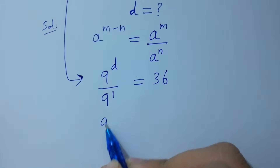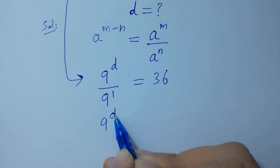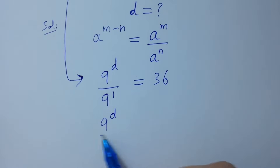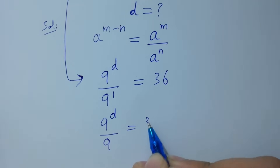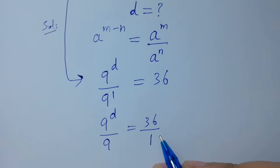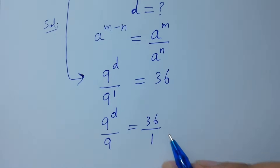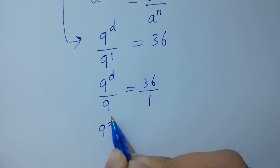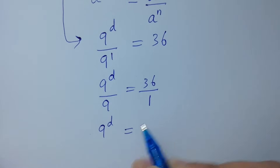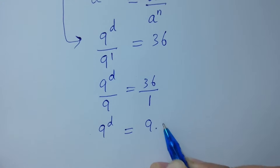9 to the power d over 9 equals 36. By cross multiplication, we get 9 to the power d equal to 9 times 36.